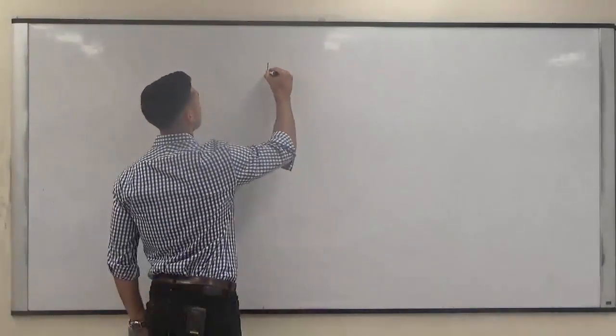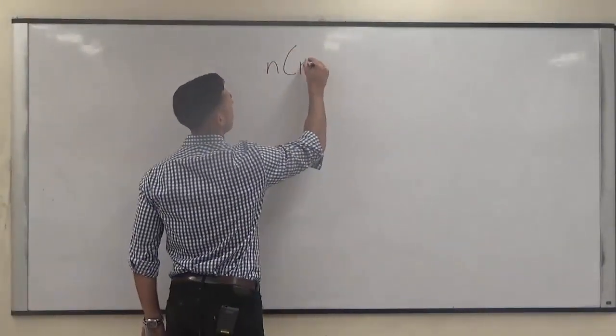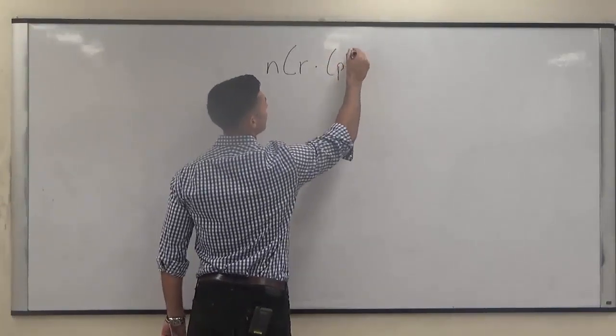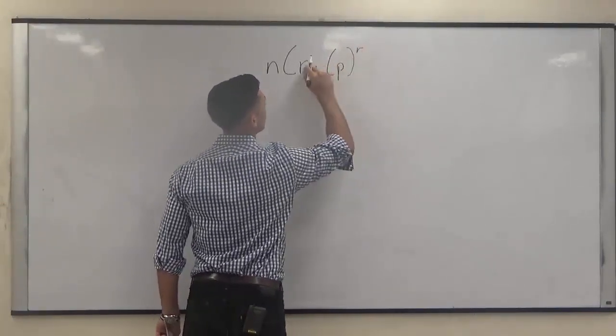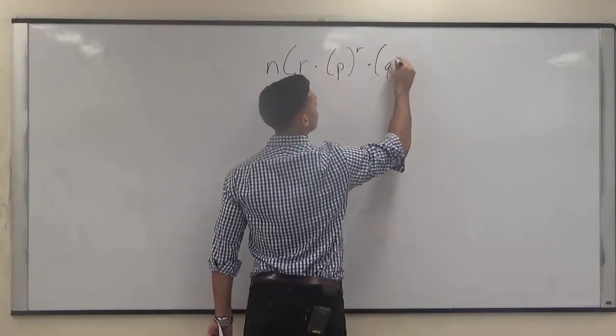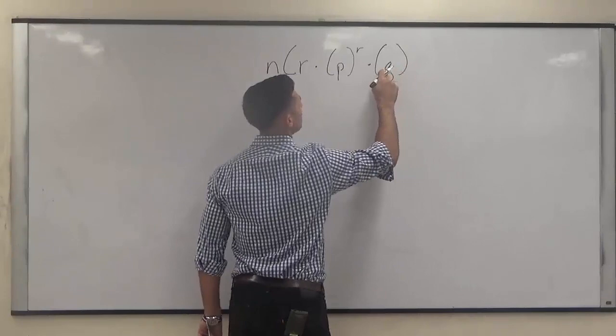So we're going to use the formula N choose R times P, the probability of the event occurring, to the R power, times Q, the probability of it not occurring,